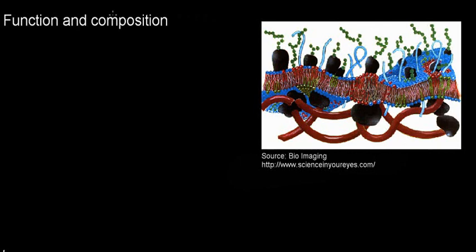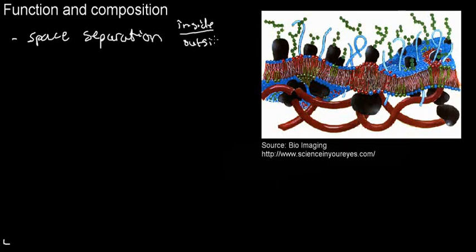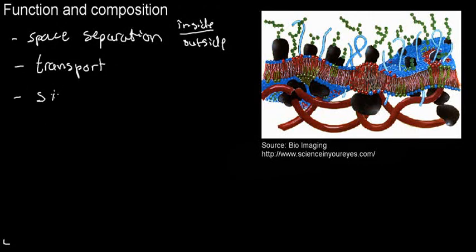We're going to cover three main functions or roles the membrane plays. First, it separates space — space separation between the intracellular and extracellular, between the inside and outside of the cell. Second, we'll talk about transport across the membrane. The membrane facilitates transport; it has certain ingredients and proteins that facilitate transport across it. And third, it has a pivotal role in signal transduction.